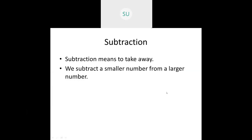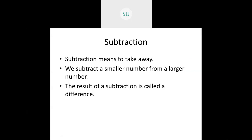We always subtract a smaller number from a larger number. The result of subtraction, or the answer you get when you subtract two numbers, is called a difference. Just as in addition we call the result a sum or total, here the answer we get after doing subtraction is called the difference. Subtraction is signified by the minus sign.